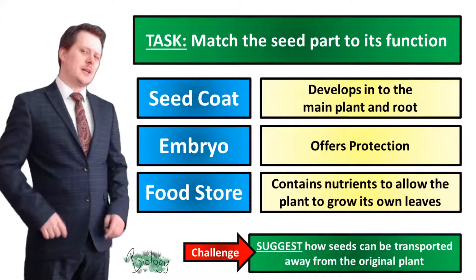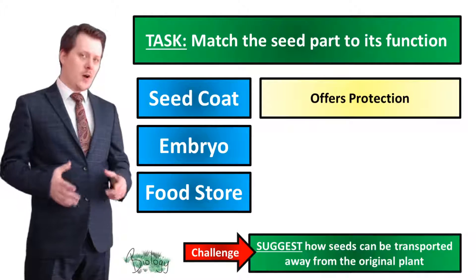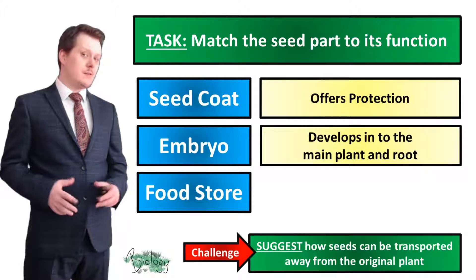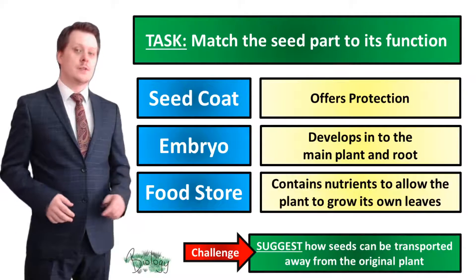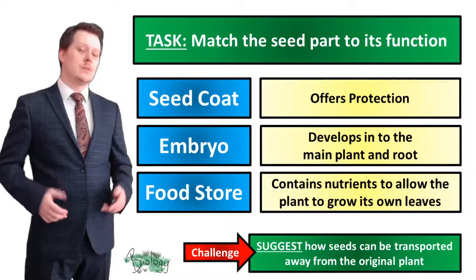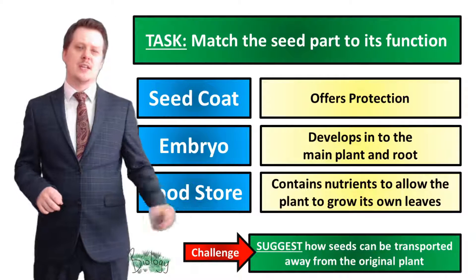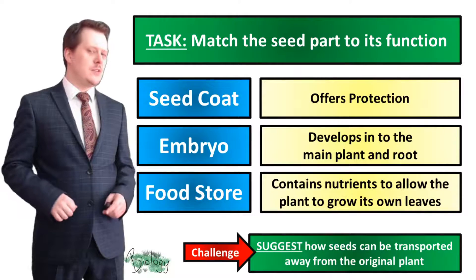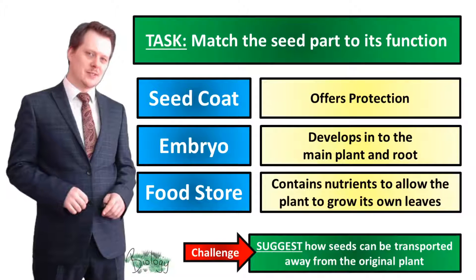Let's check our answers. The seed coat is there to offer protection to the seed. The embryo develops into the main plant and the root. The food store contains nutrients to allow the plant to grow its own leaves. If you made suggestions about how seeds can be transported away from the original plant, you can check your answers in our next lesson on seed dispersal.